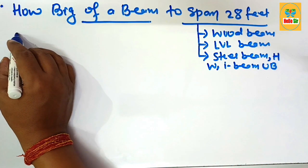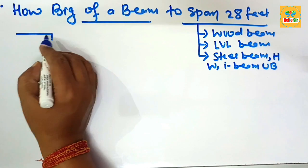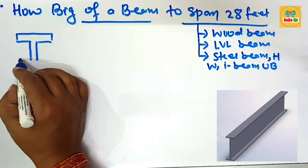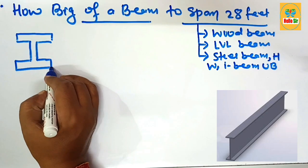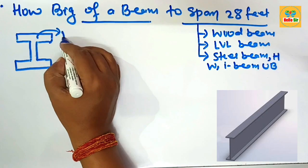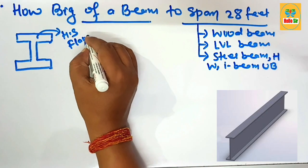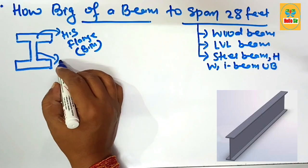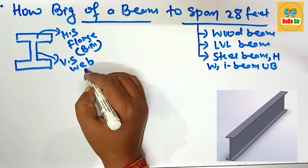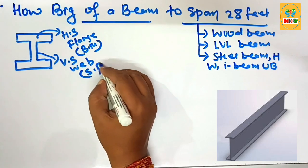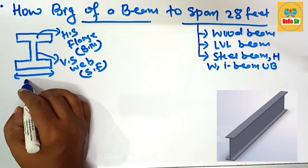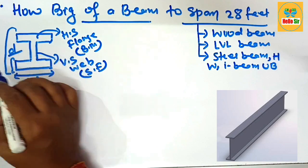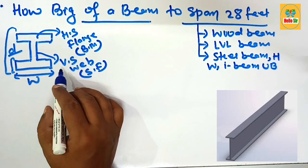First, here we make a rough diagram for the American wide flange beam, also known as the W beam. The horizontal section of the beam is known as the flange, and the flange generally resists the bending moment acting on it. The vertical section is known as the web, and it generally resists shear forces. The diagram also shows the width of flange, thickness of flange, and depth of the steel beam.